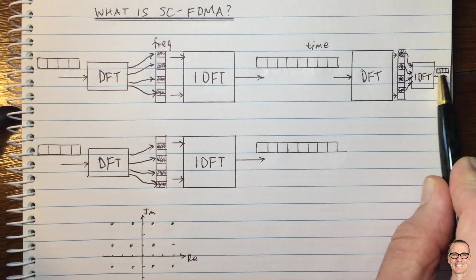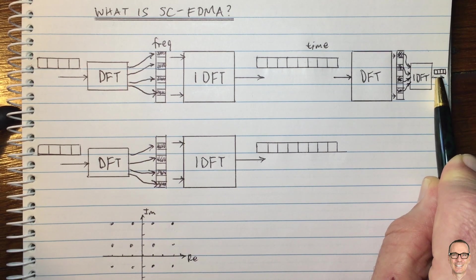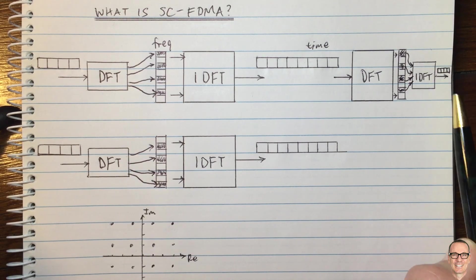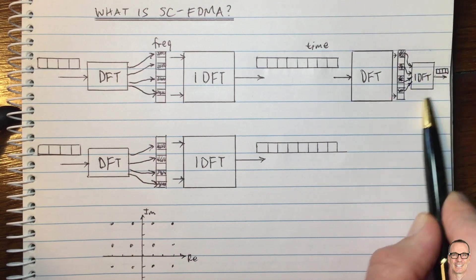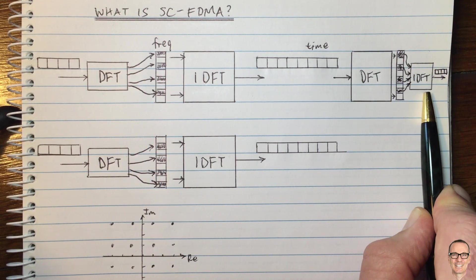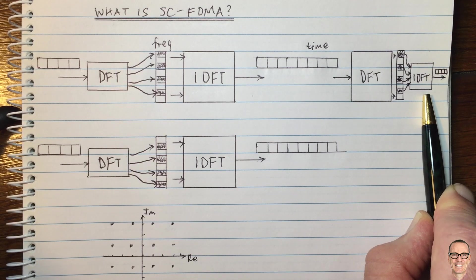So again, on the uplink, that's fine because this operation is happening in the base station, which has access to a lot of power and computational processing. But on the downlink, you would have to do the, if you were to use SCFDMA on the downlink, you would have to do that processing in the handset. And again, that would come at the expense of battery life of your handset.